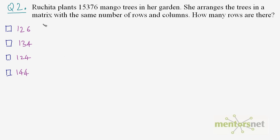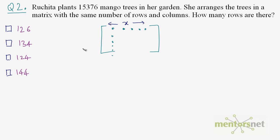Let us now move on to question number 2. Ruchita plants 15,376 mango trees in her garden. She arranges the trees in a matrix with the same number of rows and columns. How many rows are there? Ruchita arranges the trees in a square matrix. Let us say she has x trees in a column and there are x columns because the number of rows and columns are the same. So, x trees in one column and there are x columns.